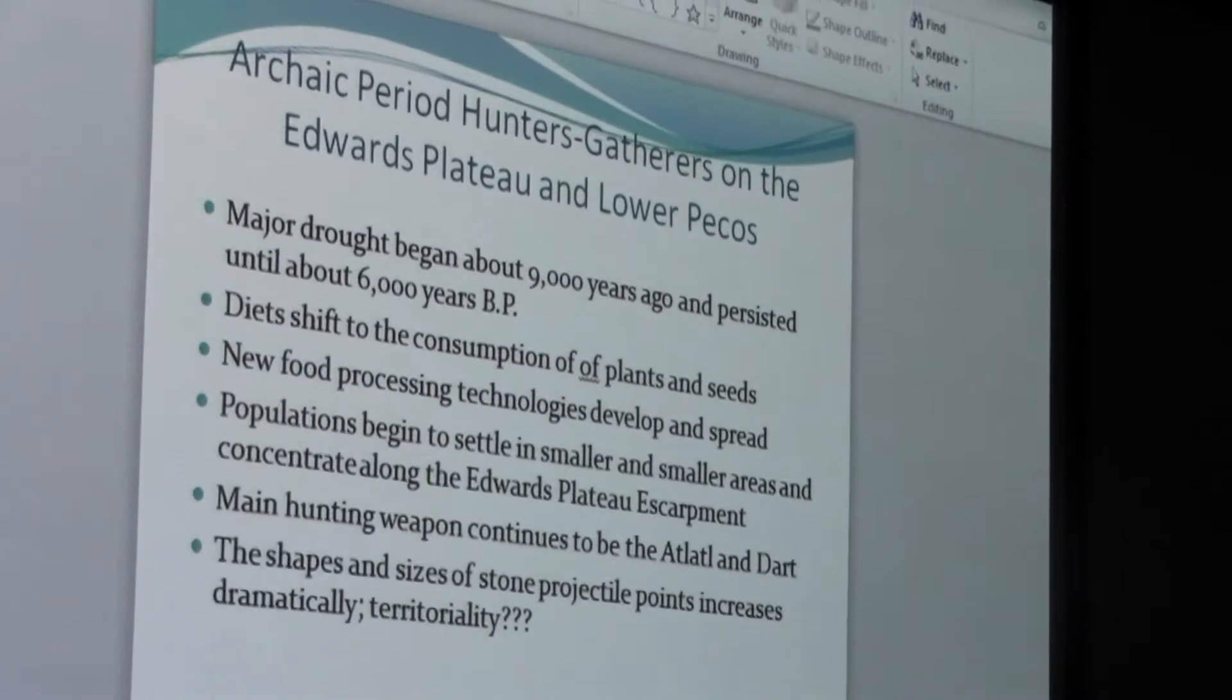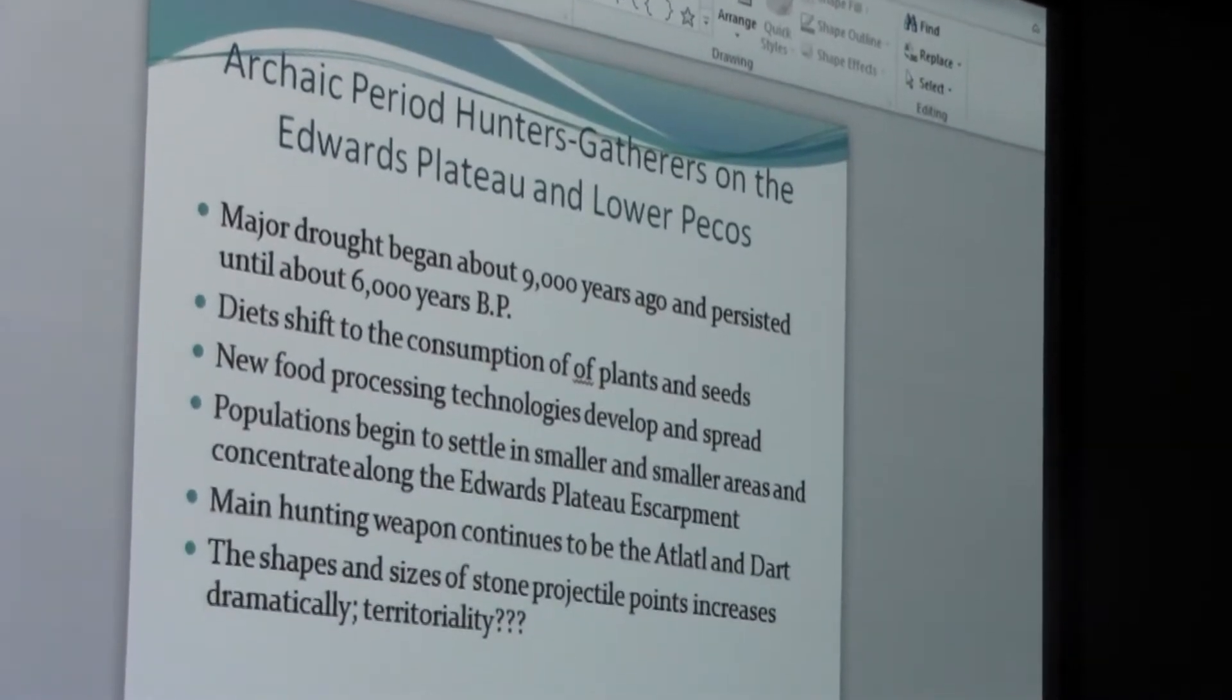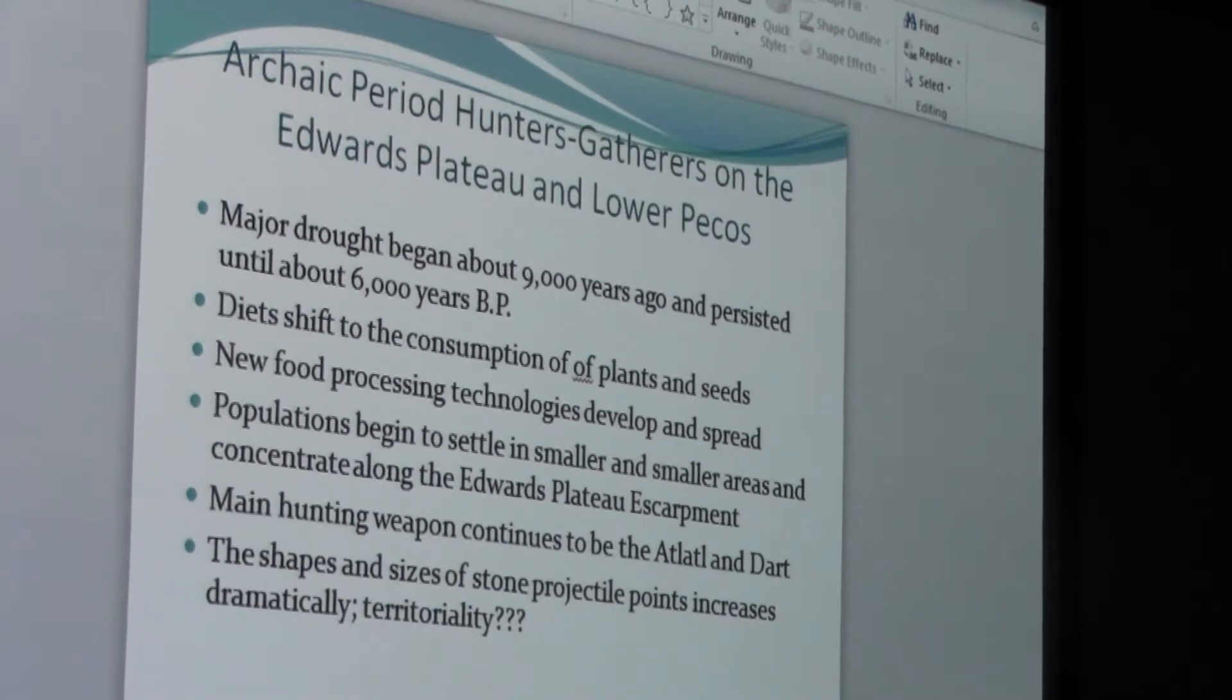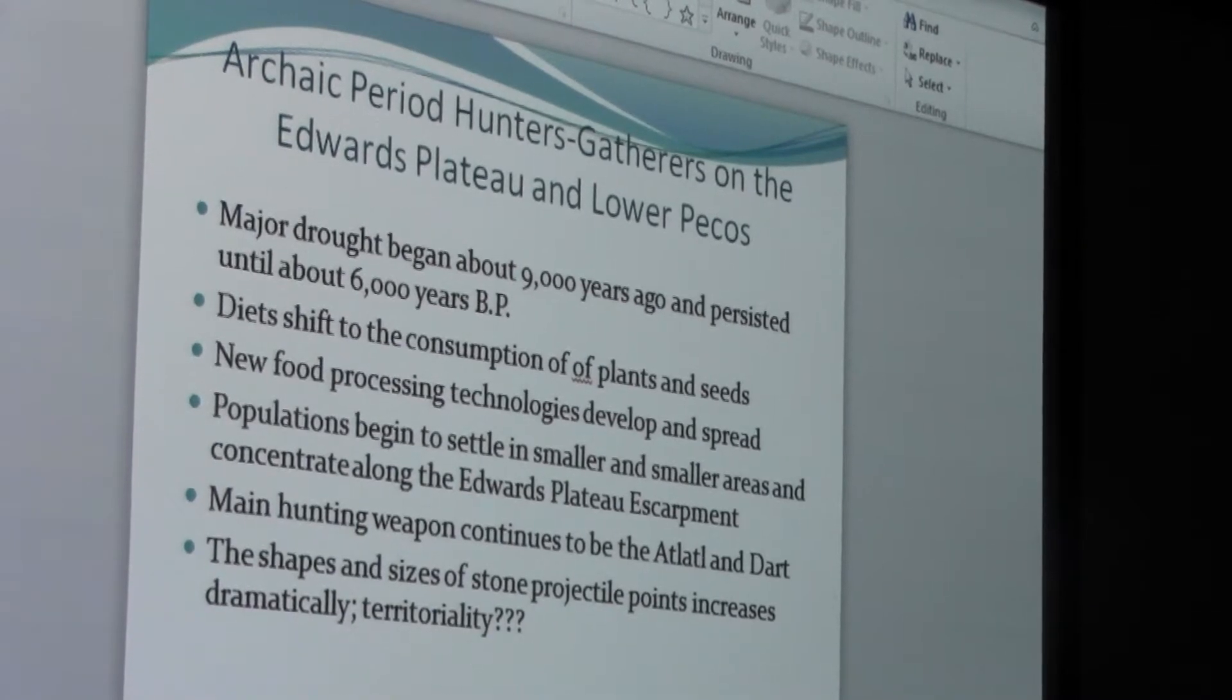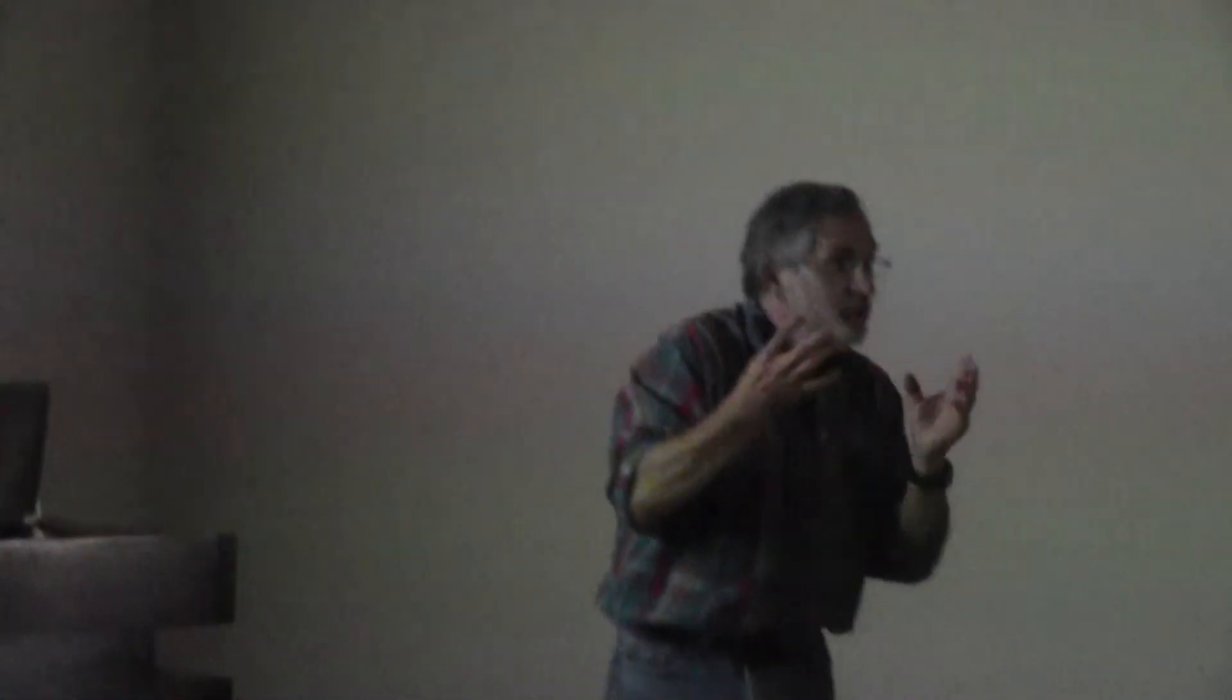The other thing that happened is populations become even smaller, more settled. In Texas and in the Edwards Plateau area, we now see rather than projected point styles covering half the state, projected point styles will cover now two or three counties only, which is really interesting because it's telling us, again, if we assume that points equal people, points are made by people and points are made in a certain shape by a group of people, by a community of people, and another community will make them differently.